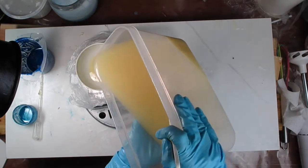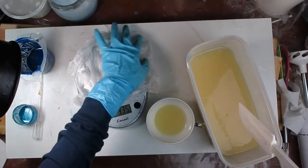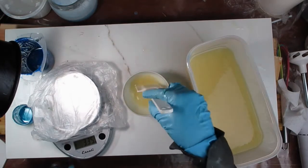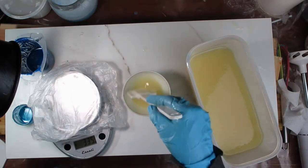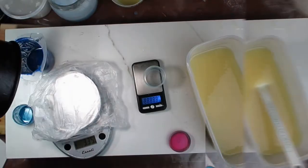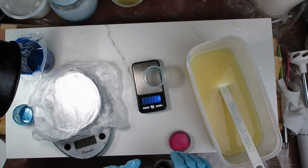I separated the one ounce of soap batter and poured it into the cup that had that tiny bit of fragrance and I'm going to blend it quickly and let it sit for a couple minutes to see what it does.